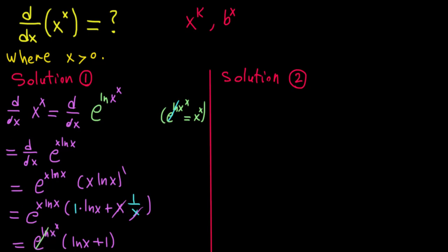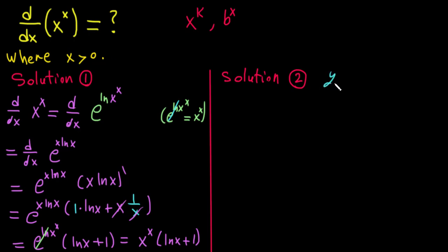So the result is x^x multiplied by (ln x + 1). That's the answer from Method 1. Now for the second method: we substitute y = x^x.